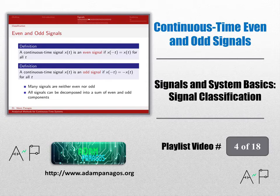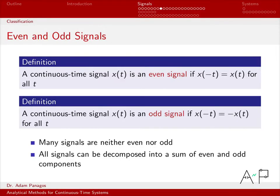Let's take a look at the definition of an even signal and an odd signal. These are properties that a signal may or may not have. An even signal has this property: x at negative time has the exact same value as the signal at that corresponding positive time. So x at time 3 equals x at time minus 3, and x at time 55.1 equals x at time minus 55.1. No matter what time you choose, the signal has the exact same value at negative time.